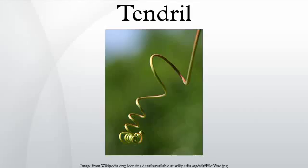In botany, a tendril is a specialized stem, leaf, or petiole with a thread-like shape that is used by climbing plants for support, attachment, and cellular invasion by parasitic plants, generally by twining around suitable hosts. They do not have a laminar blade, but they can photosynthesize.